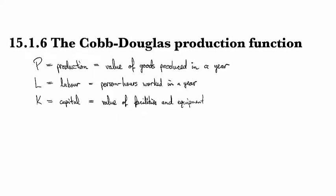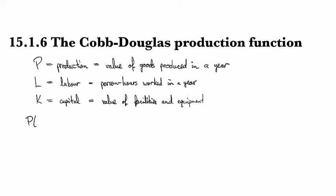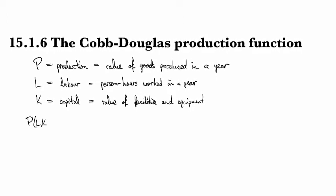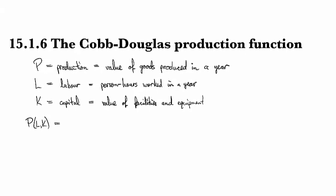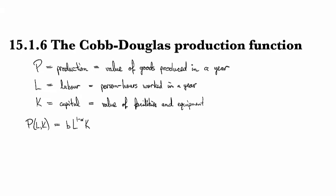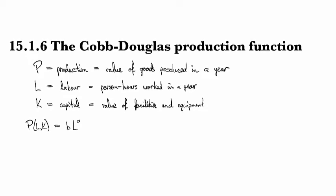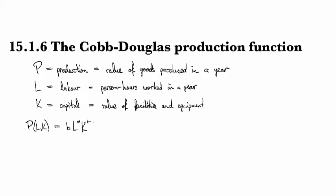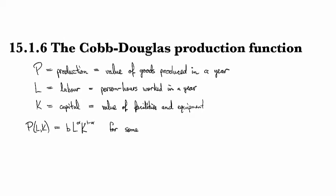And so the actual function itself says that production as a function of labor and capital is expressed as B times L to the alpha, K to the one minus alpha, for some parameters or constants.